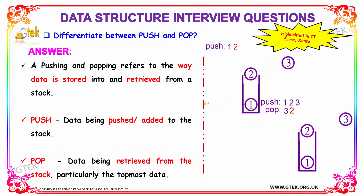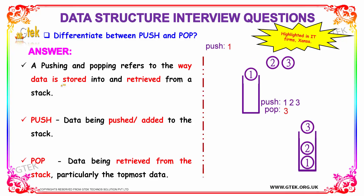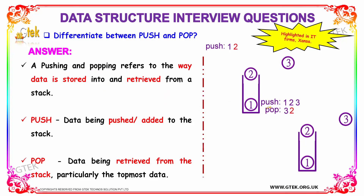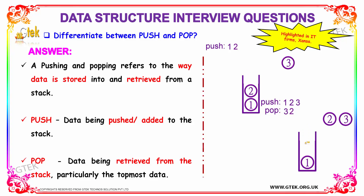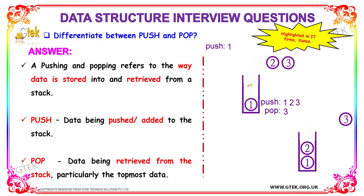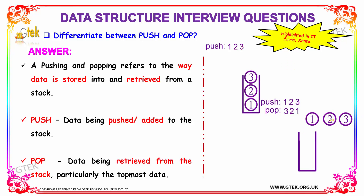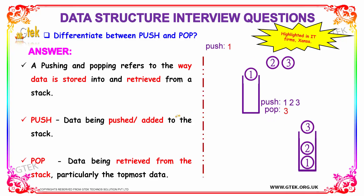The next question is: differentiate between push and pop. Pushing and popping refers to the way data is stored into and retrieved from a stack. Push means you are adding data to the stack — in this case 1, then 2, then 3. Pop means the data is being retrieved from the stack, and this follows last in first out. Since 3 was added last into your stack, it is popped out first, then 2 and 1. So that is what is meant by push and pop.